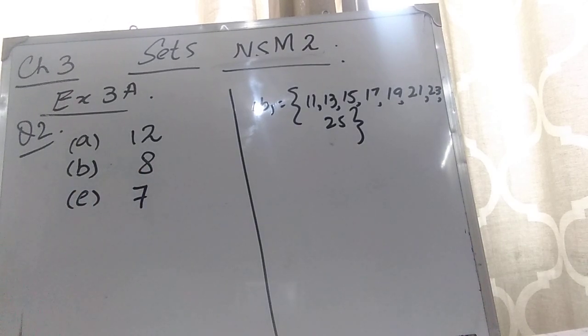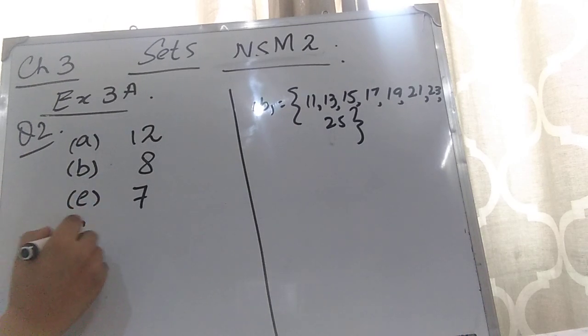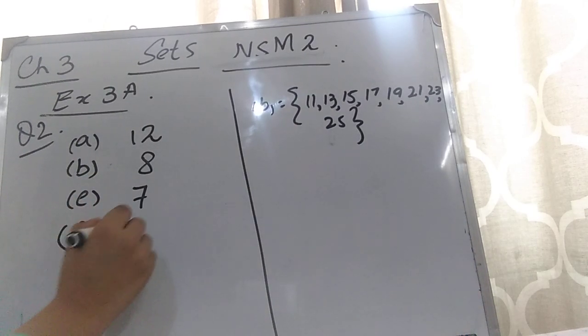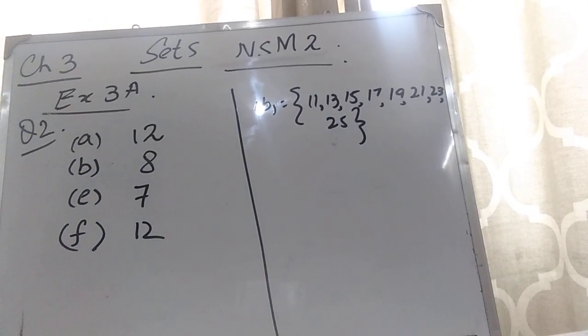Part F: horoscope signs. You know that there are 12 months, so there are 12 horoscope signs. So the number of elements is 12.